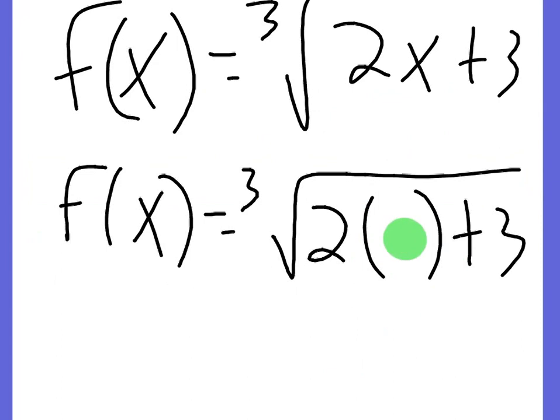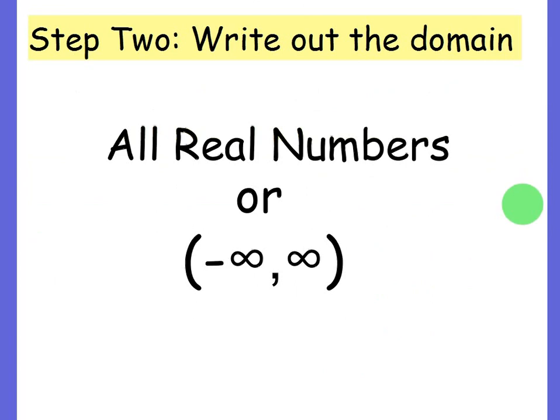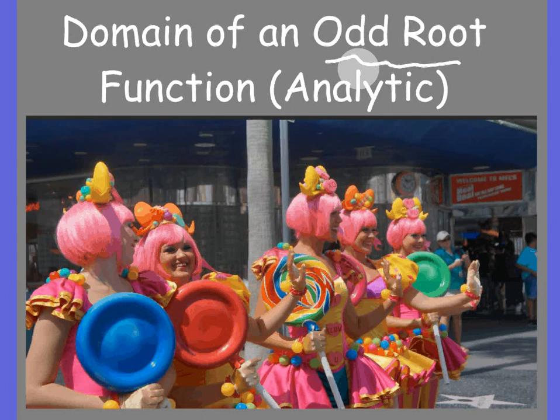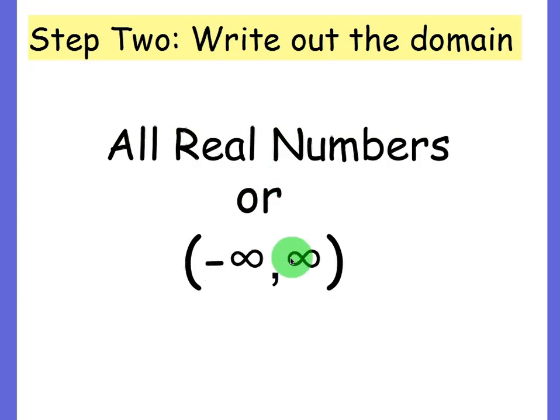Just test some numbers out and you're going to see that no matter what you plug in, you're going to get something back. Since you can plug in anything, the domain is going to be all real numbers. And this again applies for odd root functions. Anytime it's an odd root function, the domain is going to be all real numbers.